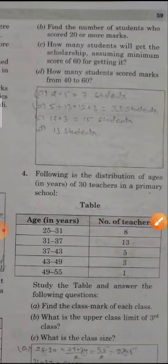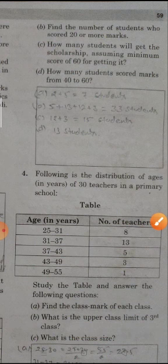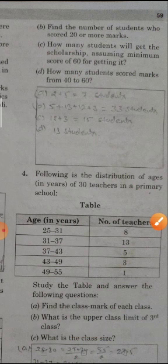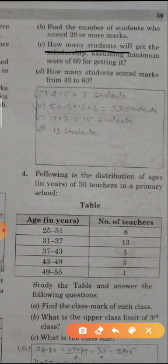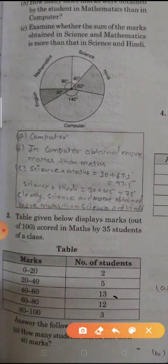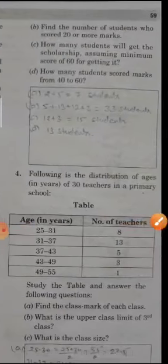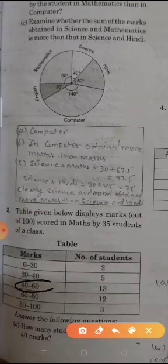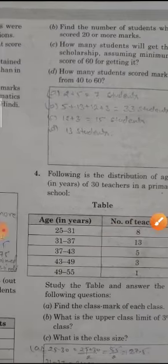Second is, find the number of students who scored 20 or more marks. 5, 13, 12, and 3 means 33 students. C is, how many students will get the scholarship assuming minimum score of 60? 12 plus 3 is equal to 15 students. These students have 60 and more than 60 marks. D, how many students score marks from 40 to 60? 40 to 60 is 13 students.